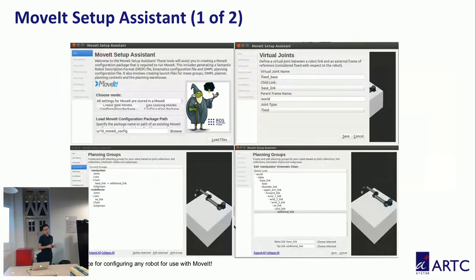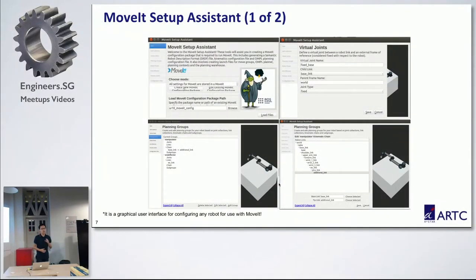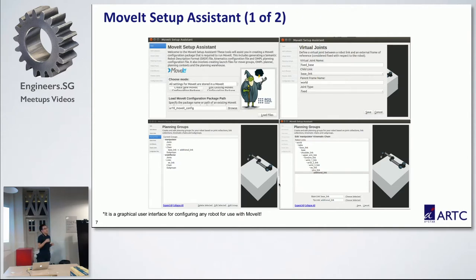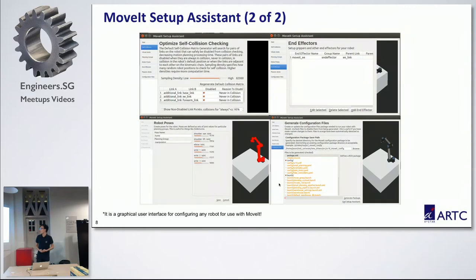Next, we need to load the URDF into MoveIt Setup Assistant. MoveIt Setup Assistant generates configuration files and launch files. As you can see, we need to set up the virtual joint. We also need to set up the planning groups, which tell the system about the different parts of the robot. We can also set up the robot pose — for example, the home position of the robot.